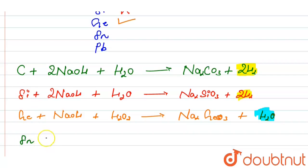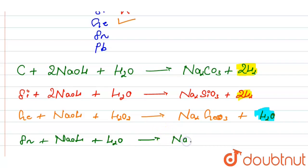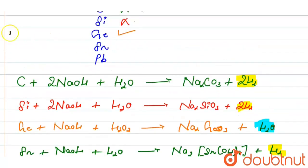When Sn (tin) reacts with NaOH, it gives Na₂[Sn(OH)₄] and H₂. This reaction also evolves hydrogen gas, so tin is not our answer.